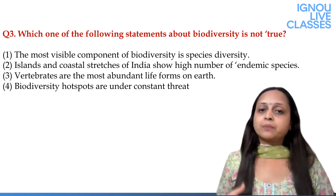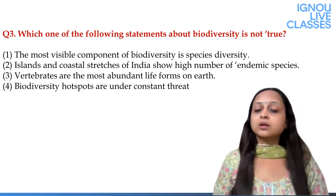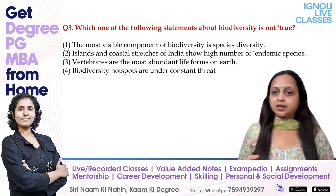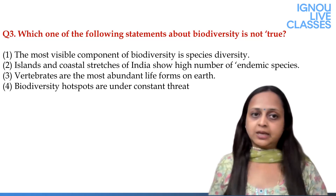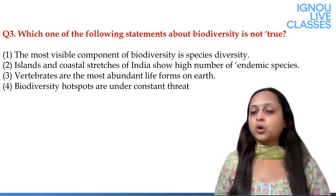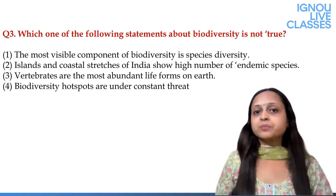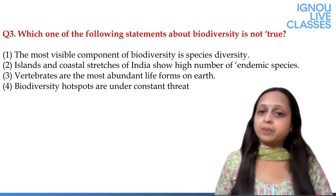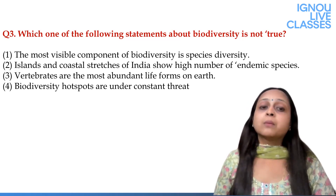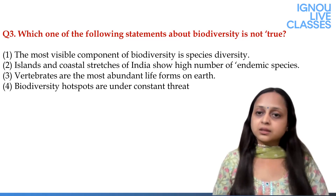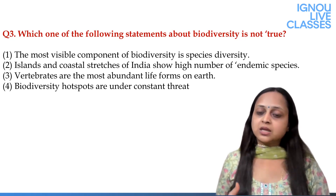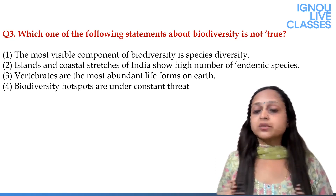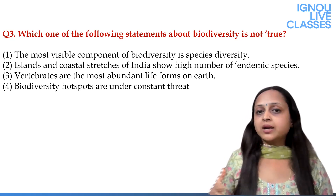Islands and coastal areas do show high endemism. Statement three: vertebrates are the most abundant life form on earth — this is not true. In fact, vertebrates make up less than five percent of life forms on earth. The most abundant life forms are microbes. Biodiversity hotspots are under constant threat — the third main criterion is that species are endangered and under constant threat from humans. So the correct answer is option 3.